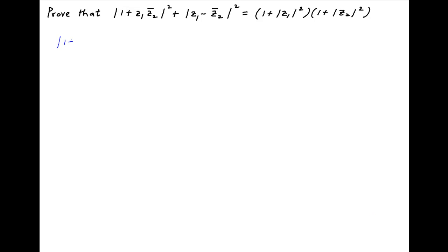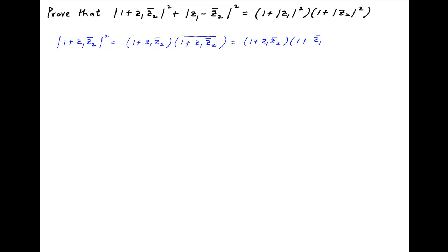The square of the absolute value of 1 plus z1 times the conjugate of z2 can be written as 1 plus z1 times the conjugate of z2, multiplied by the conjugate of 1 plus z1 times the conjugate of z2. This equals 1 plus z1 times the conjugate of z2, multiplied by 1 plus the conjugate of z1 times z2, since the conjugate of the conjugate of z2 is z2.